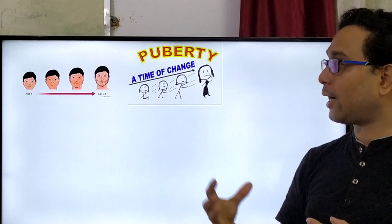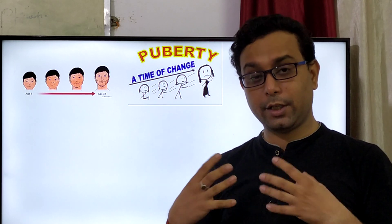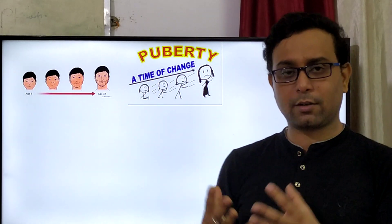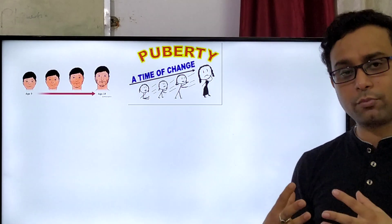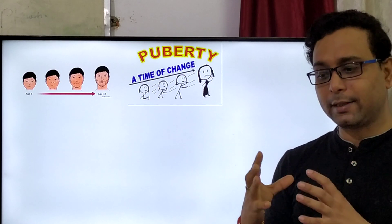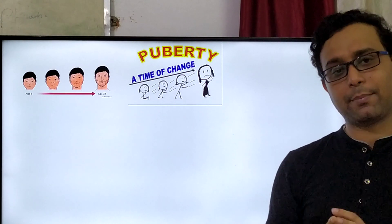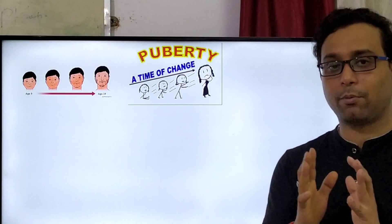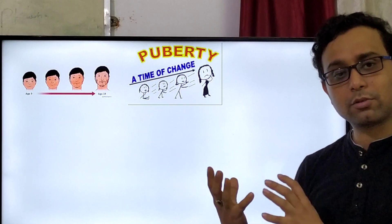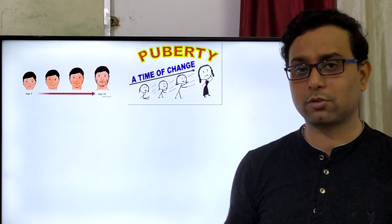Puberty is a time of change. Lots of changes are happening in your body and in your mind. This chapter is very important, not only for your educational purpose. It is also important for every parent to learn how their child is going to change at a particular age. The first types of changes that are happening are also very important knowledge for the parents.